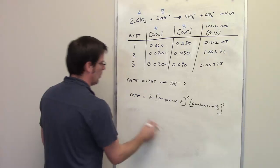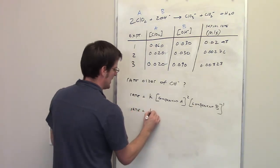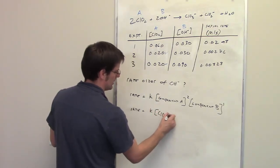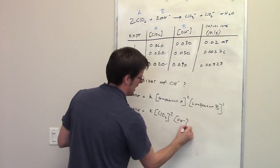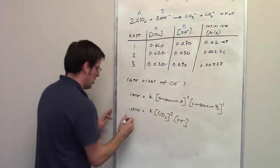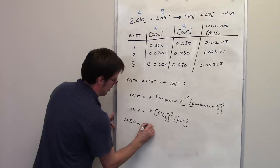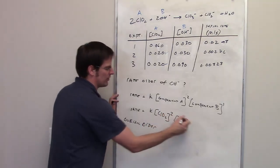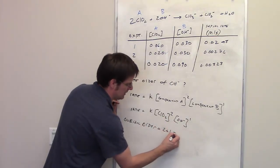The overall order, and by the way, we can rewrite the rate law as being K multiplied by the concentration of component A, which is chlorine dioxide squared, multiplied by the concentration of component B, which is hydroxide, to the first power. The overall rate order, or I'll write overall order, is equal to, all I do is take the exponents, 2 and 1, and add them together. Equals 2 plus 1 equals 3.